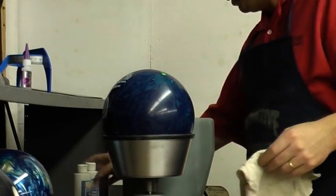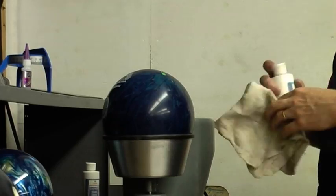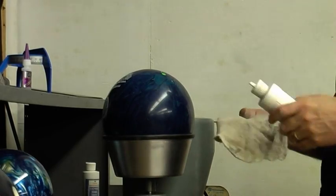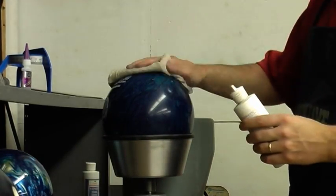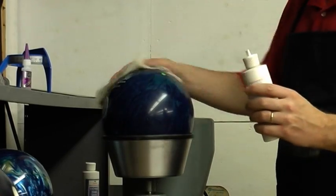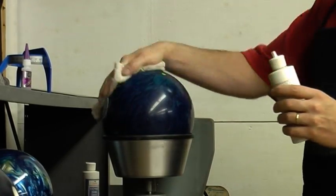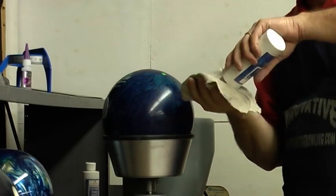Alright, so the next thing we'll do, we'll use a little compound. Now a compound is a liquid, but it actually has a grit in there. So what it does is it removes some of the finer scratches out of the ball.